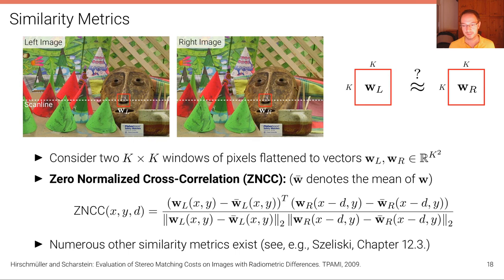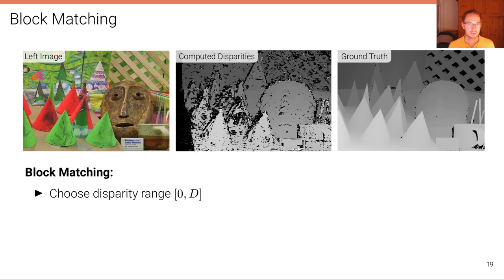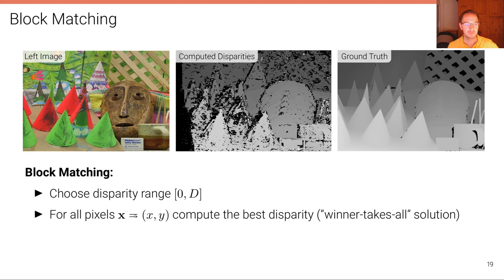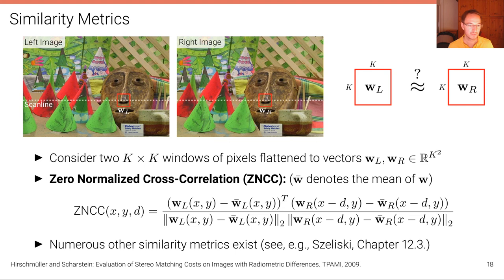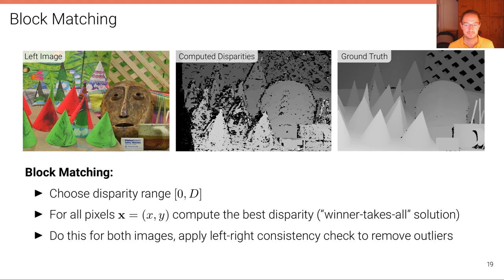Given a similarity metric, the block matching algorithm is simple: choose a disparity range from 0 to D_max (where D_max determines the closest measurable point), then for all pixels compute the best disparity using winner-takes-all — minimizing SSD or maximizing ZNCC. This is done for both the left and right image to enable a left-right consistency check to remove outliers.